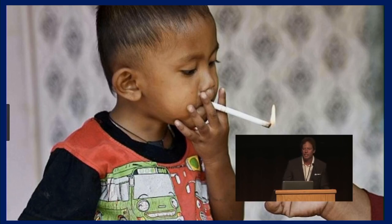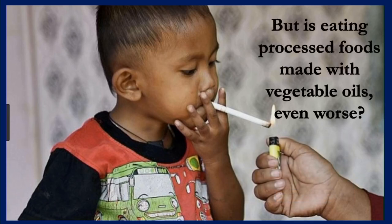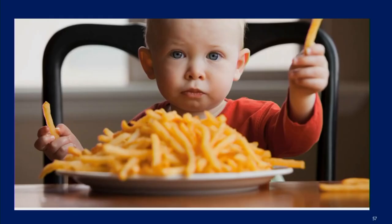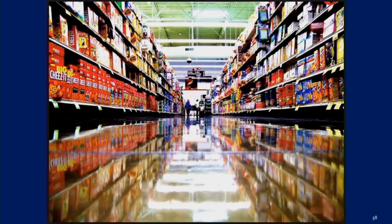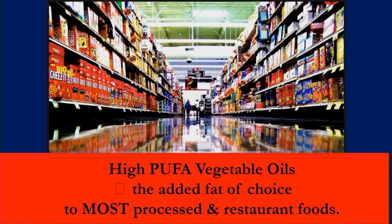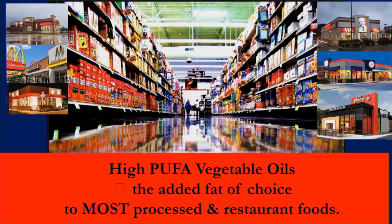This looks like child abuse, does it not? But the question is: is eating processed foods made with vegetable oils even worse? I submit to you that it indeed is. Because when this two-year-old boy eats these french fries, he's poisoned for the next two to six years. Why? Because the half-life of these oils in cell membranes is 600 to 680 days. And these oils are not just in french fries or potato chips — they're in hundreds of thousands of foods all around the planet. They are the fat of choice added to these foods, in restaurants everywhere, because they're the cheapest oils — about a dollar per kilogram.